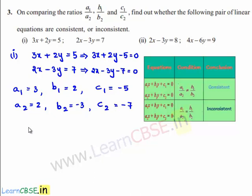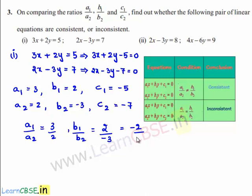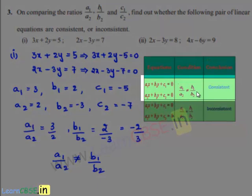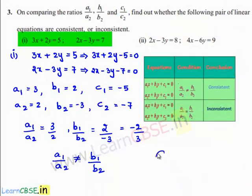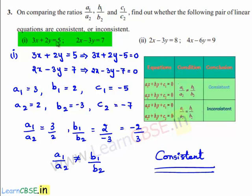Let us find out the values of a1/a2, which is 3 divided by 2, and b1/b2 is equal to 2 divided by minus 3, which is nothing but minus 2 divided by 3. So a1/a2 is not equal to b1/b2. By using the first condition, if a1/a2 is not equal to b1/b2, we say that the given set of linear equations are consistent. Therefore, the given equations 3x plus 2y is equal to 5 and 2x minus 3y is equal to 7 are consistent.